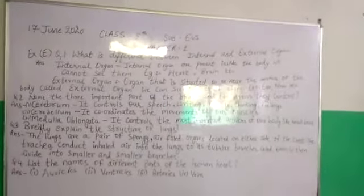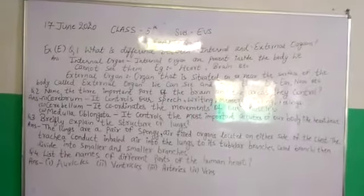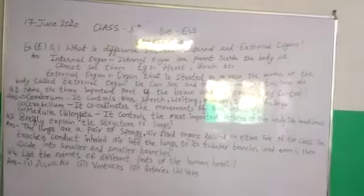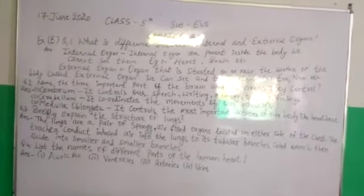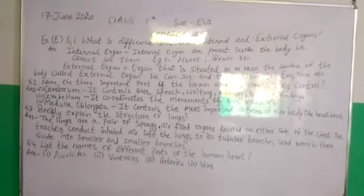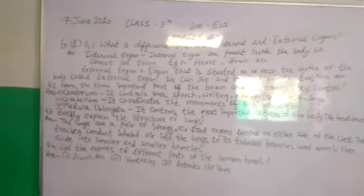What is the difference between internal and external organs? Internal organs are present inside the body. We cannot see them. Example: heart, brain, etc.